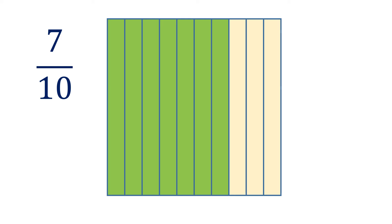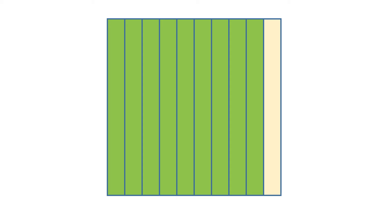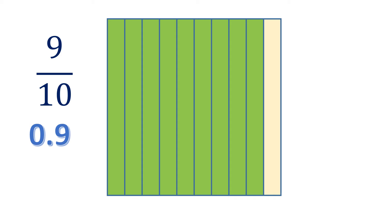Another one — we have seven shaded parts out of ten. So in fraction, it's seven-tenths. Also, in decimal, it's 0.7. Another example: we have nine shaded parts out of ten, or in fraction, nine over ten. And in decimal, it's 0.9. Both are read as nine-tenths.